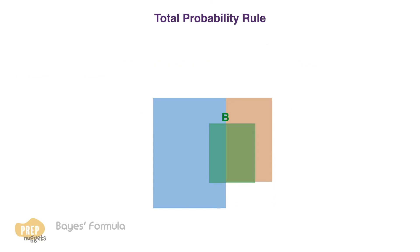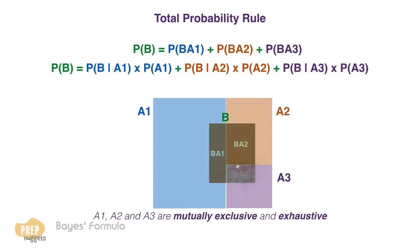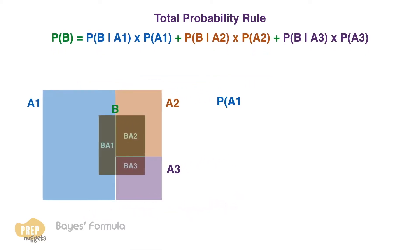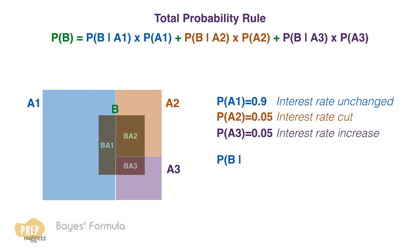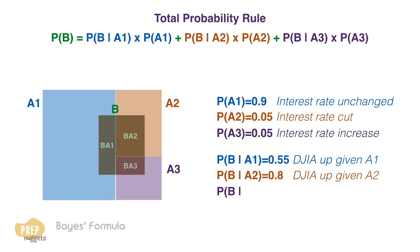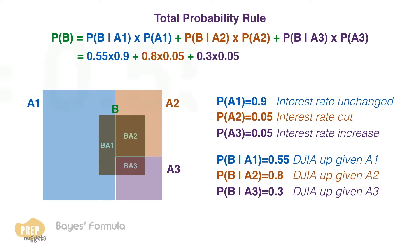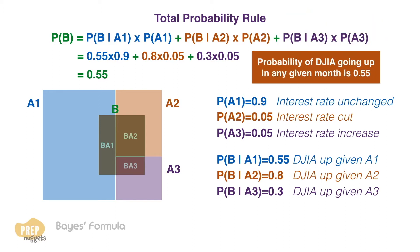The total probability rule can be applied to multiple events. So in this case, if A1, A2, and A3 are mutually exclusive and exhaustive, we can find the unconditional probability of B by summing up the three conditional probabilities. We've gone through this example earlier, where we used the total probability rule to find the unconditional probability that the Dow Jones would go up in any given month. By summing up the known probabilities into the total probability rule, we get an unconditional probability of 0.55. This means that the likelihood of the Dow Jones going up in any given month, regardless of interest rate movements, is 0.55.